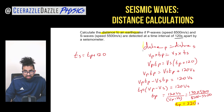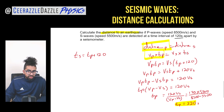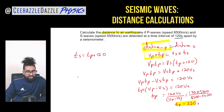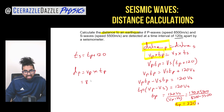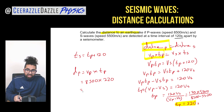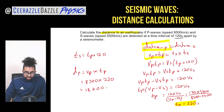Now working out the distance: we use distance = Vp × Tp. You could also use Vs × Ts, but you'd need to calculate Ts first. Using the P wave: distance = 8500 × 220 = 1,870,000 meters. That's the final answer.